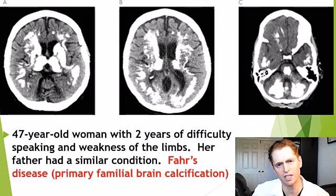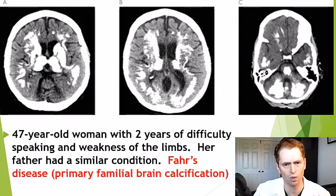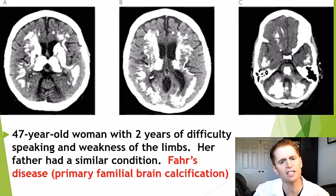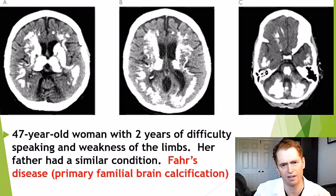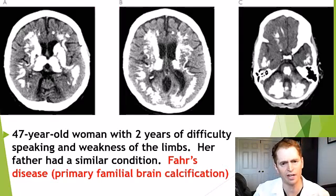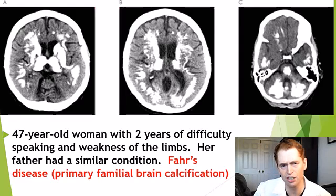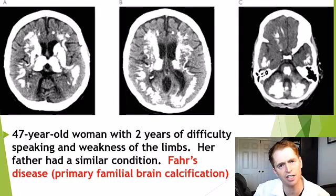This is the 47-year-old woman with a progressive movement disorder who has brain calcifications — this is Fahr's disease, a genetic condition as noted by her family history. A similar condition called Fahr's syndrome can occur with altered calcium metabolism, as in hyperparathyroidism. I've actually seen both forms of this.